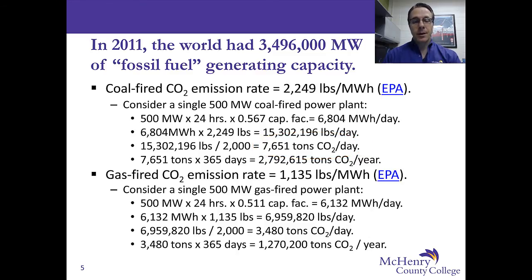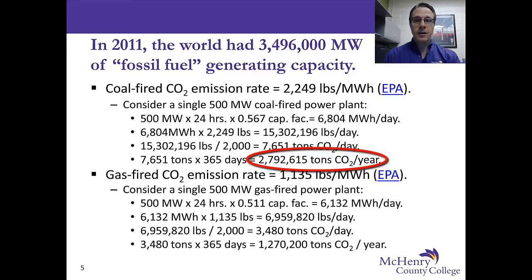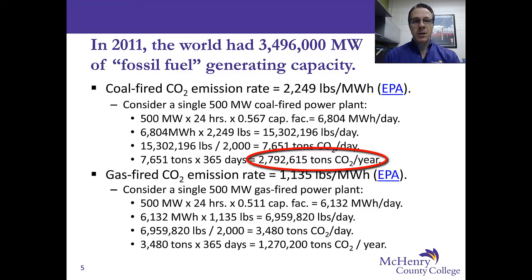Multiplying 7,651 tons per day by 365 days gives us how much CO2 is emitted in a year: 2,792,615 tons of carbon dioxide per year. Many times we simply say that a 500 megawatt coal-fired power plant, on average, will emit about 3 million tons of carbon dioxide per year. That's a fairly common statement in much of the industry, and this is a modest-sized power plant.